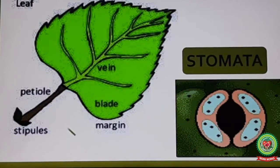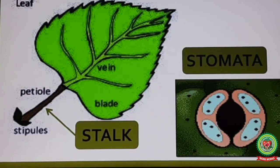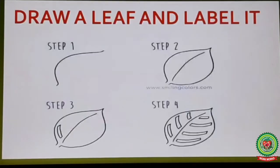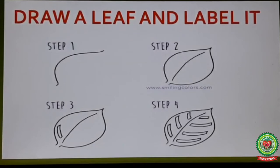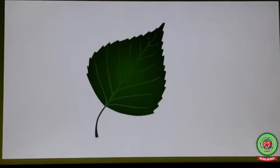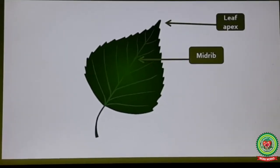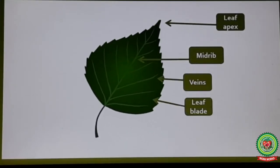This part of the leaf is known as the stalk — the tiny branch that holds the leaf to the stem. Now follow these four steps to draw a leaf. After drawing, you will be able to label the parts of a leaf: number one, leaf apex; number two, midrib; number three, veins; number four, leaf blade; and lastly, stalk.